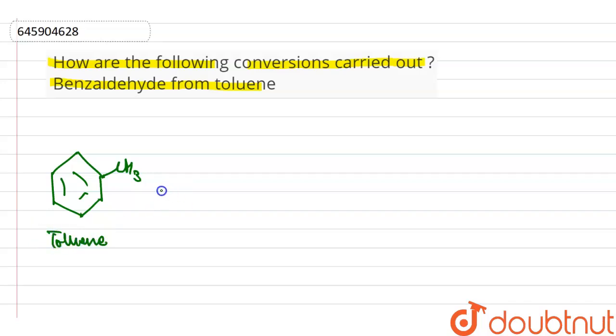When toluene reacts with chromium chloride, that is CrO2Cl2, in the presence of CS2, then it will be changed into benzene ring CHOCrOHCl2 twice. That is our intermediate product.